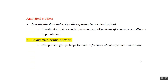Two things are very clear from analytical studies: the investigator does not assign the exposure and there is no randomization. We take careful measurement of the pattern of exposure and disease in the population, and there is always a comparison group present, which helps us make inferences about exposure and disease. In the next sessions, we will talk about individual study designs which are analytical in nature.